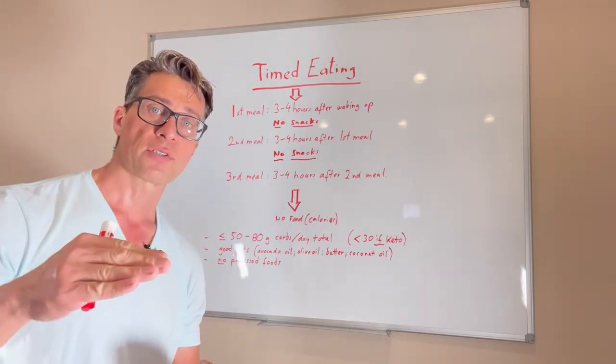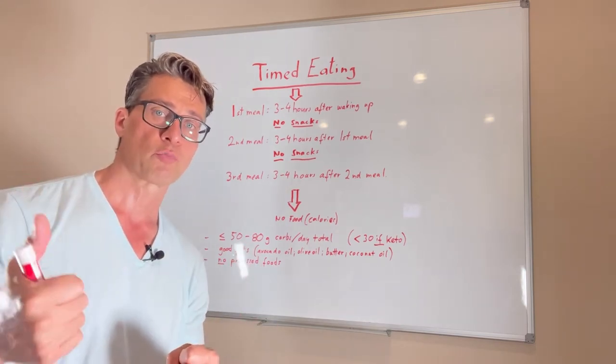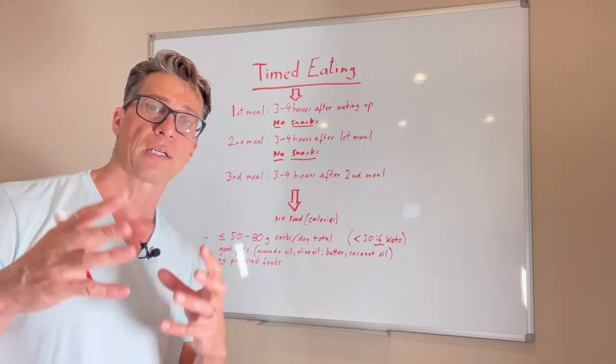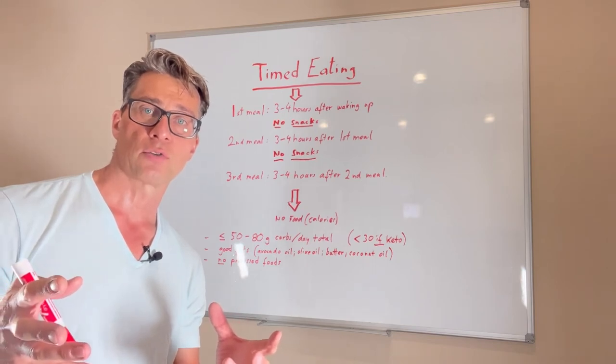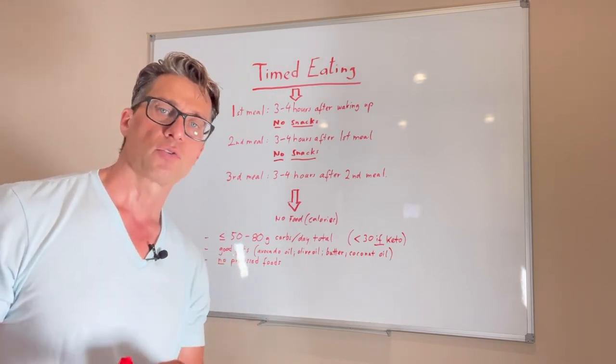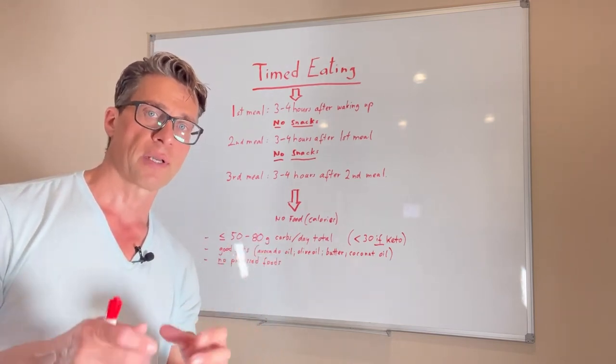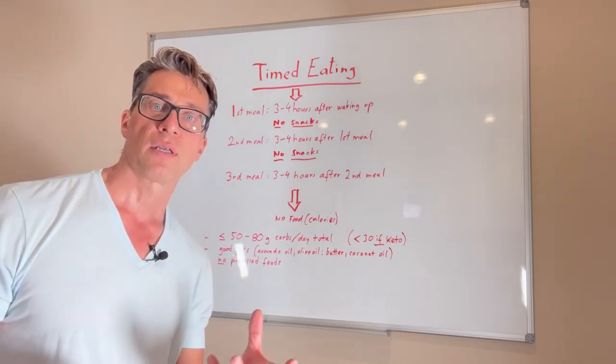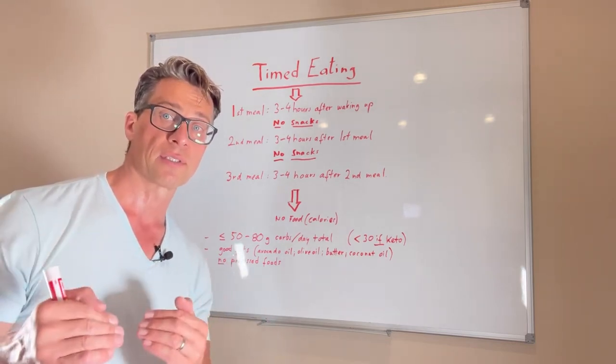So three to four hours after waking up, first meal, good composition, good protein, good fats, and again, carbs are okay here in terms of healthy carbs. So some oatmeal, for example, small amounts, some berries, I think that's fine in the morning. I wouldn't go heavy on those later in the day.